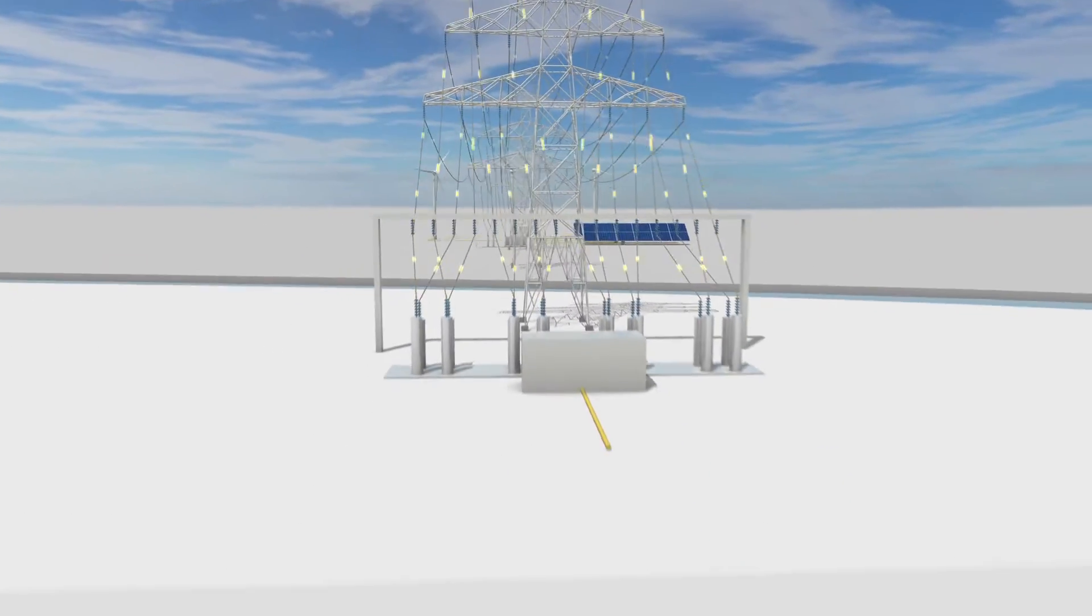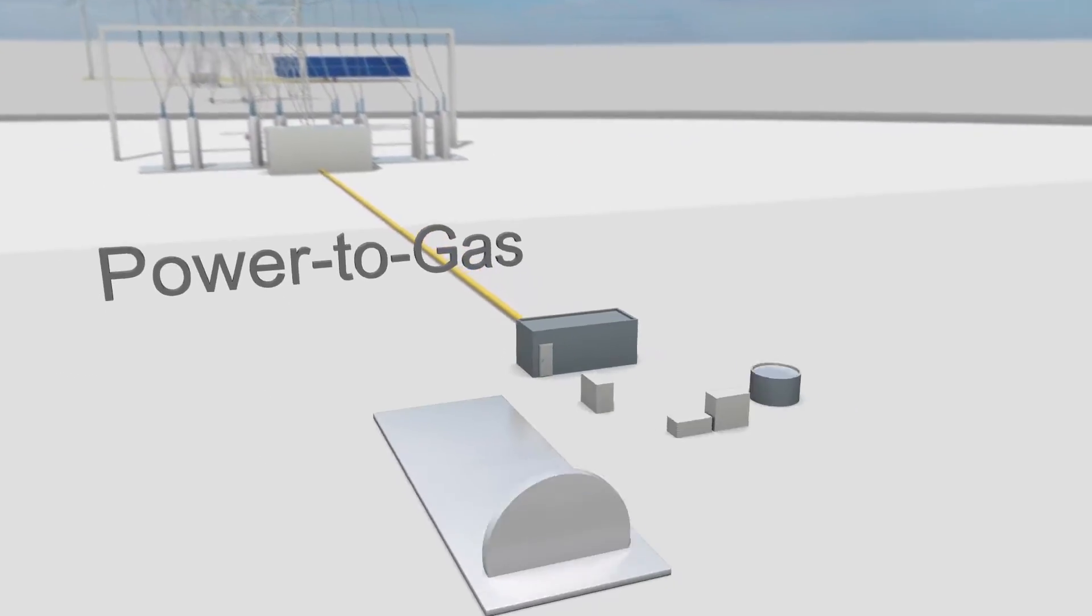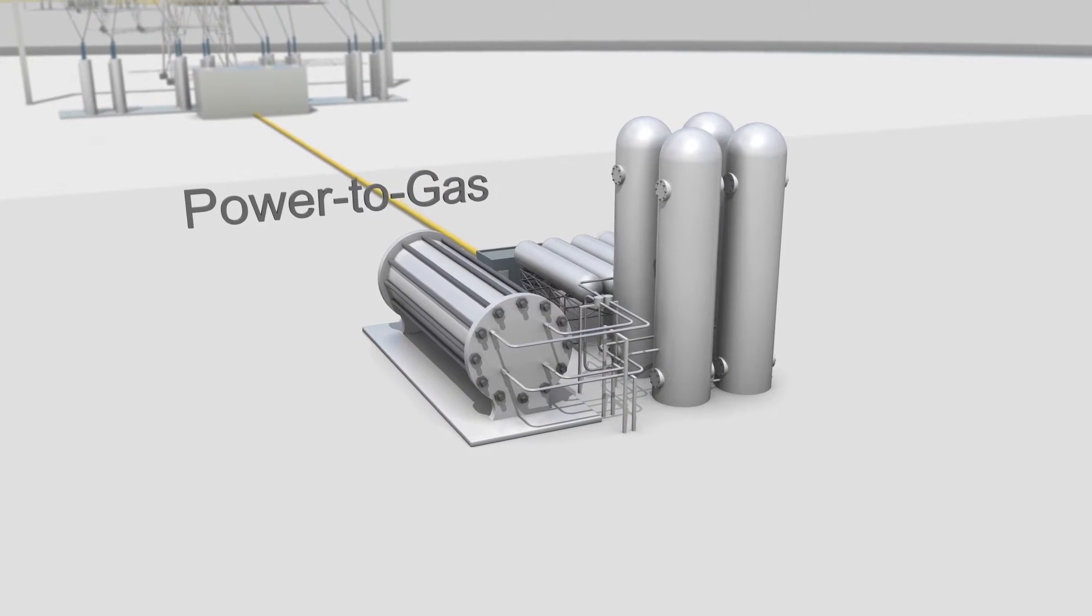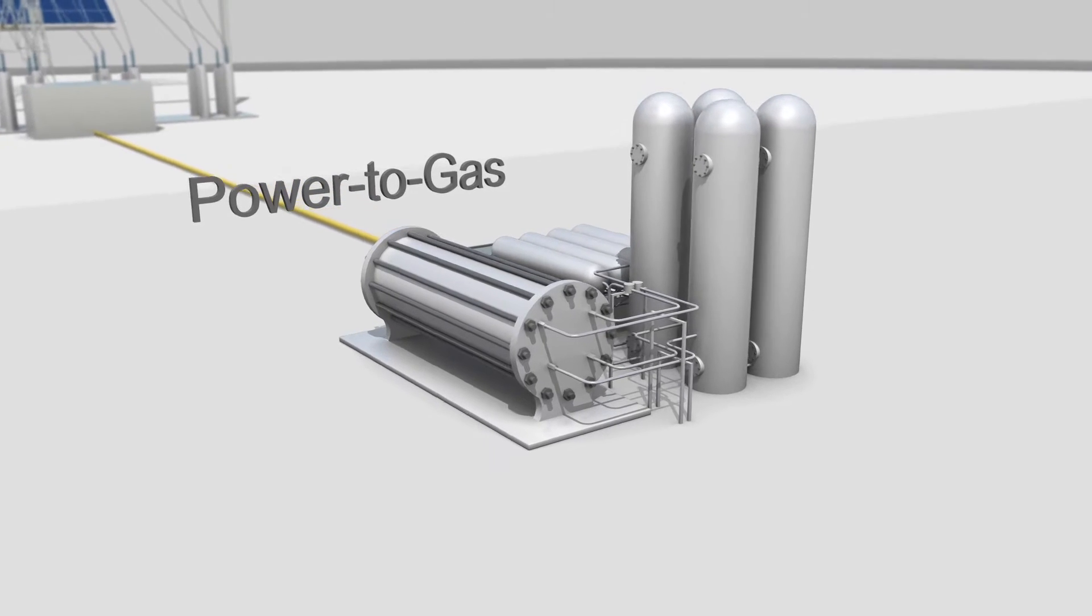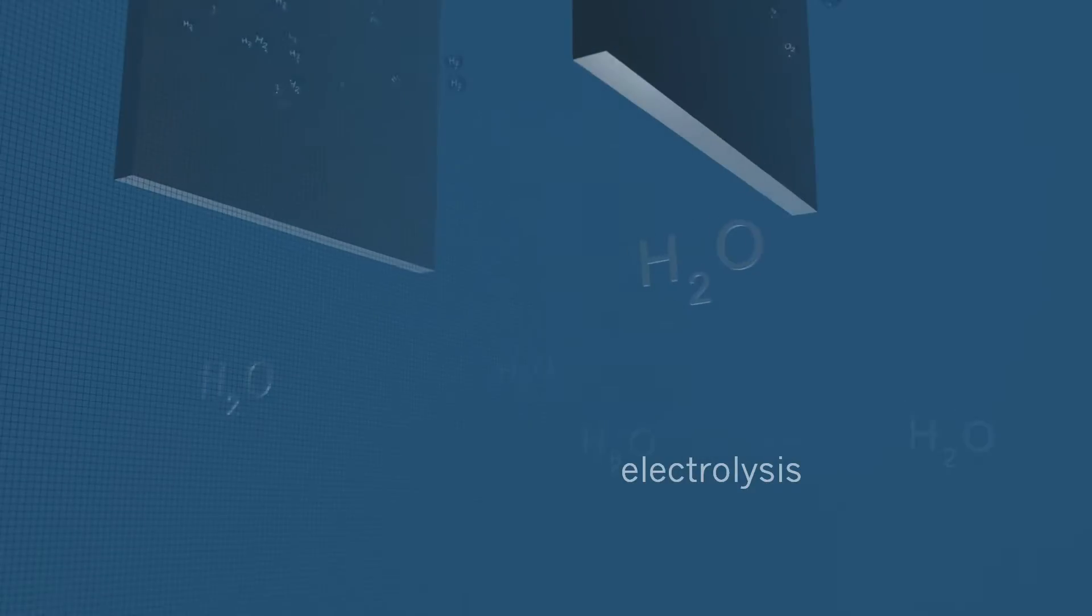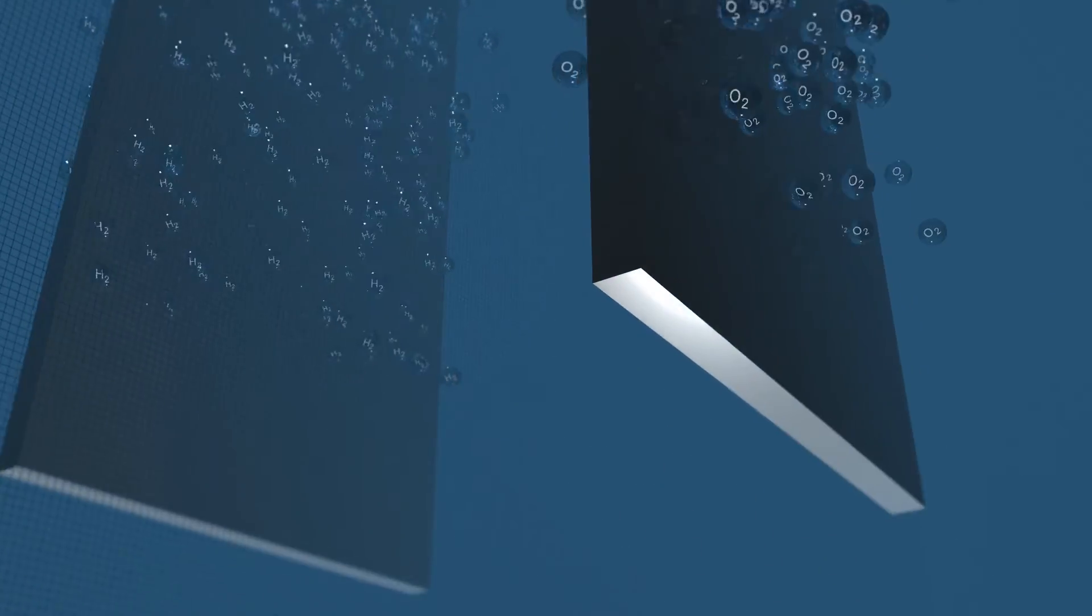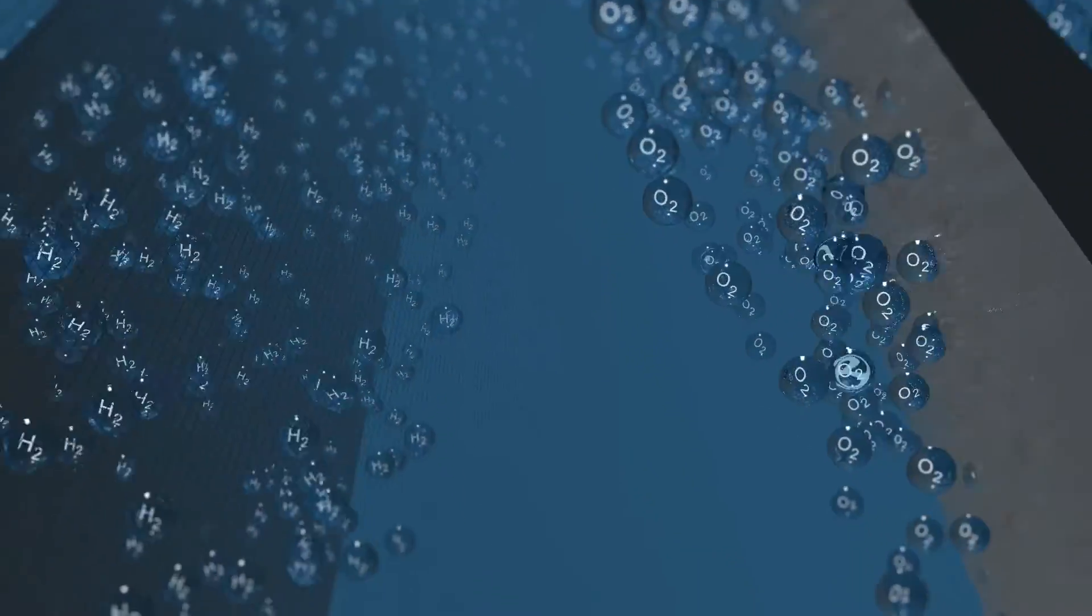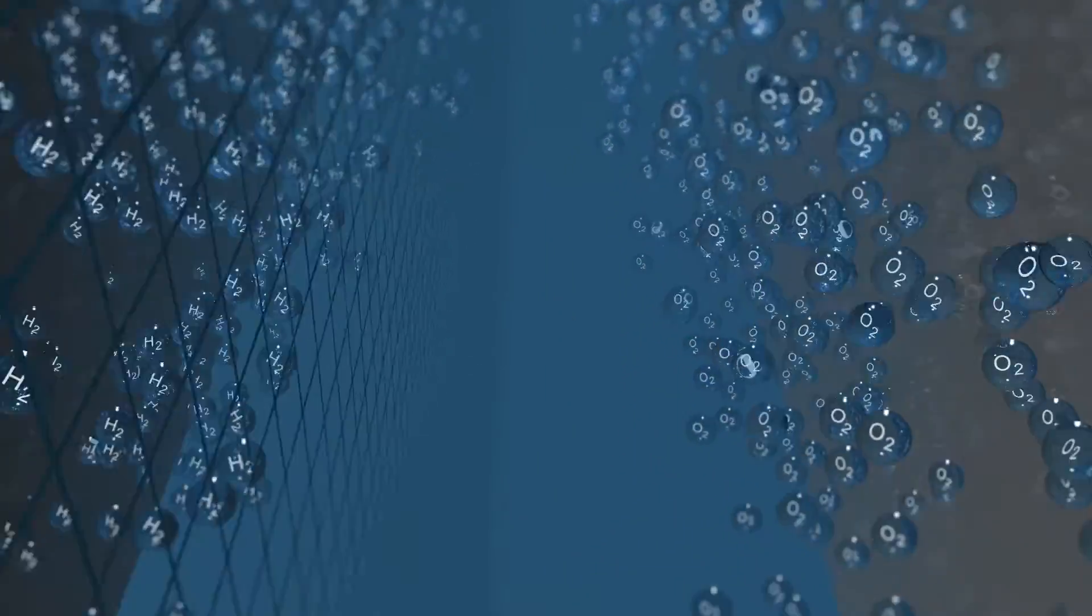This principle is called power-to-gas. Basic to a power-to-gas installation is water. By adding electricity, we engage in a process called electrolysis. By doing so, we create two types of gas, hydrogen and oxygen.